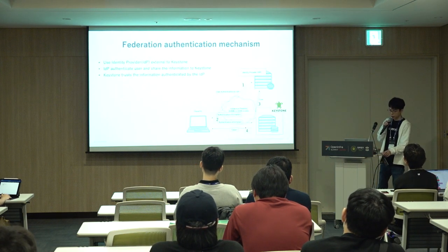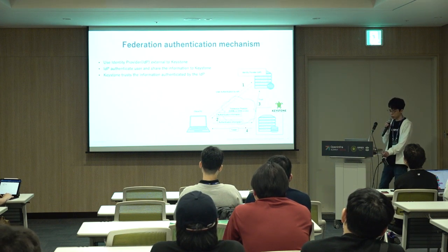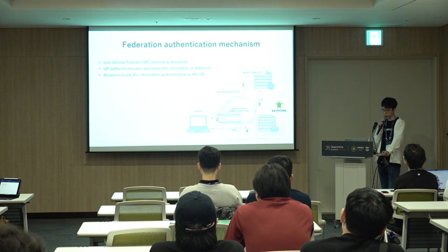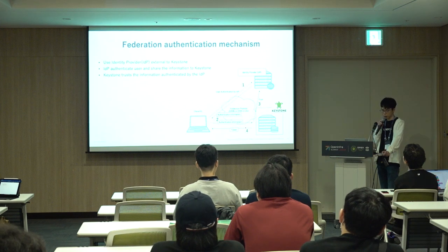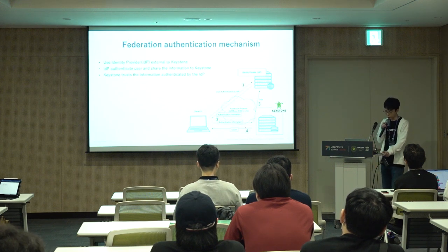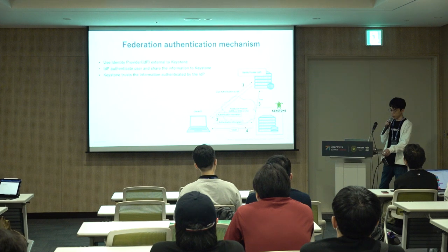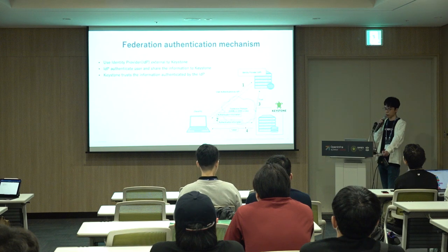Next, I will explain the federation authentication mechanism. Since this is related to our main topic, I will go into more detail. The federation authentication mechanism uses an identity provider — external to Keystone. Authentication is handled by the identity provider, and the authentication information is shared with Keystone using federation protocols such as OIDC and SAML. Keystone then trusts this information and issues a user token.